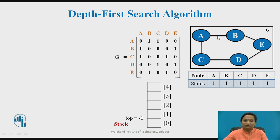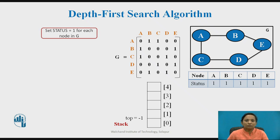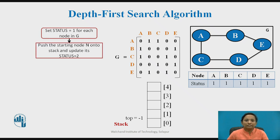Here, graph G with nodes A, B, C, D is shown, along with its adjacency matrix representation. The status array for each node is initialized to 1, and the stack data structure used as a helping structure during this algorithm is shown here. The first step is to set the status to 1 for each node in graph G — all node statuses are set to 1. Then push the starting node N onto the stack and update its status to 2.